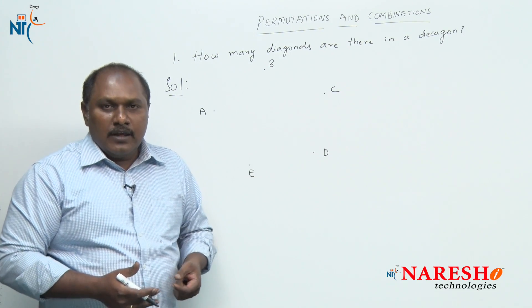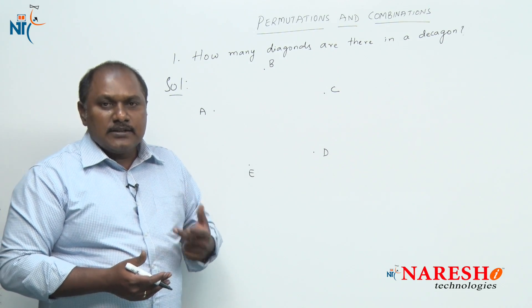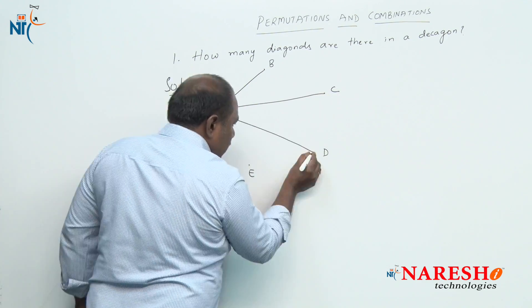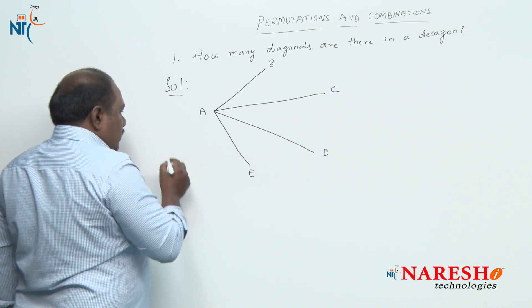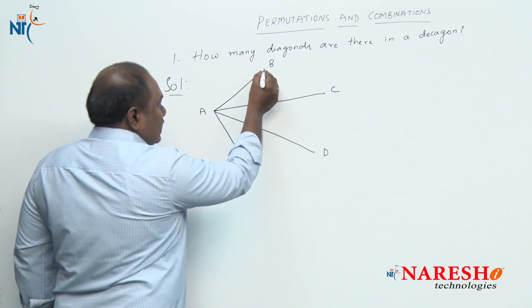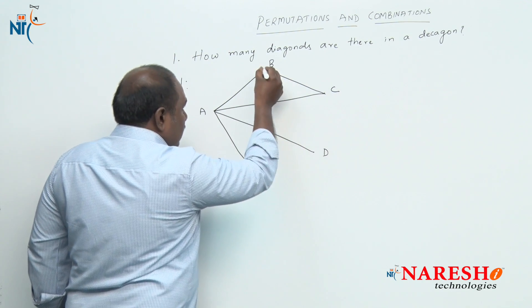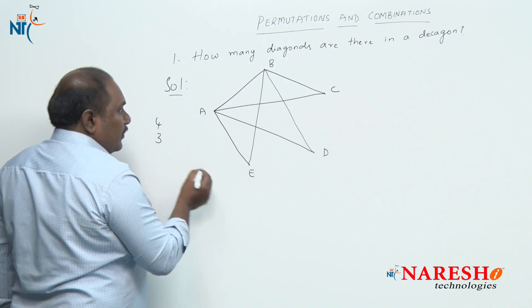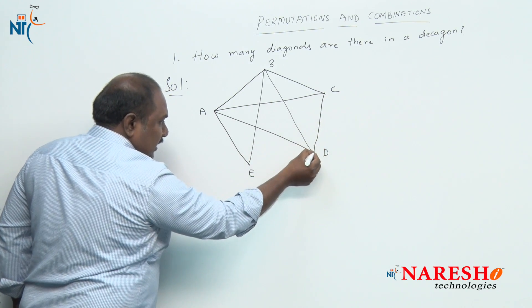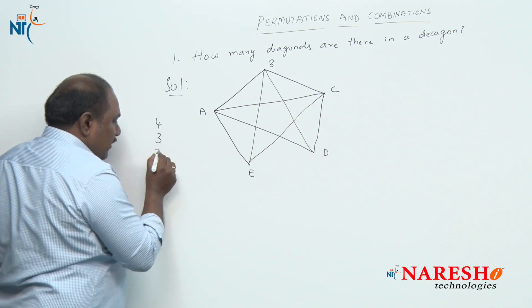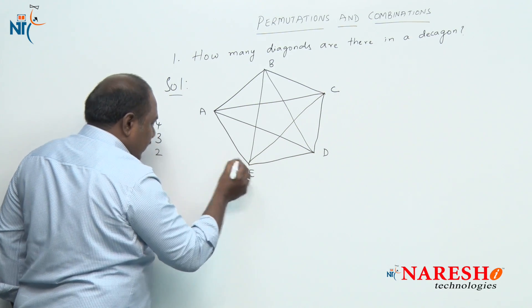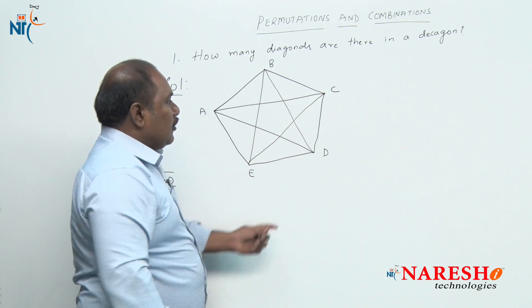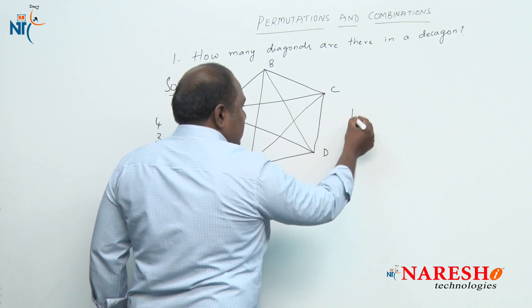A line joining two points is a line segment. Starting from A: AB, AC, AD, AE — that gives four line segments. Starting from B: BC, BD, BE — three line segments. Starting from C: CD, CE — two line segments. From D: DE — one. So the total number of line segments that we can draw using five non-collinear points is 10.